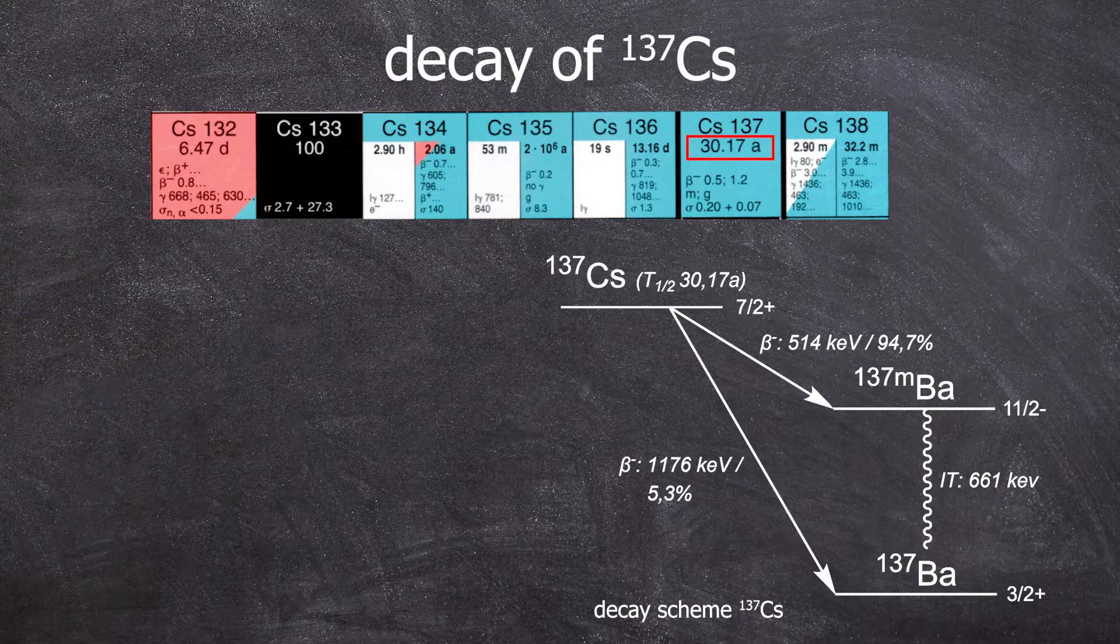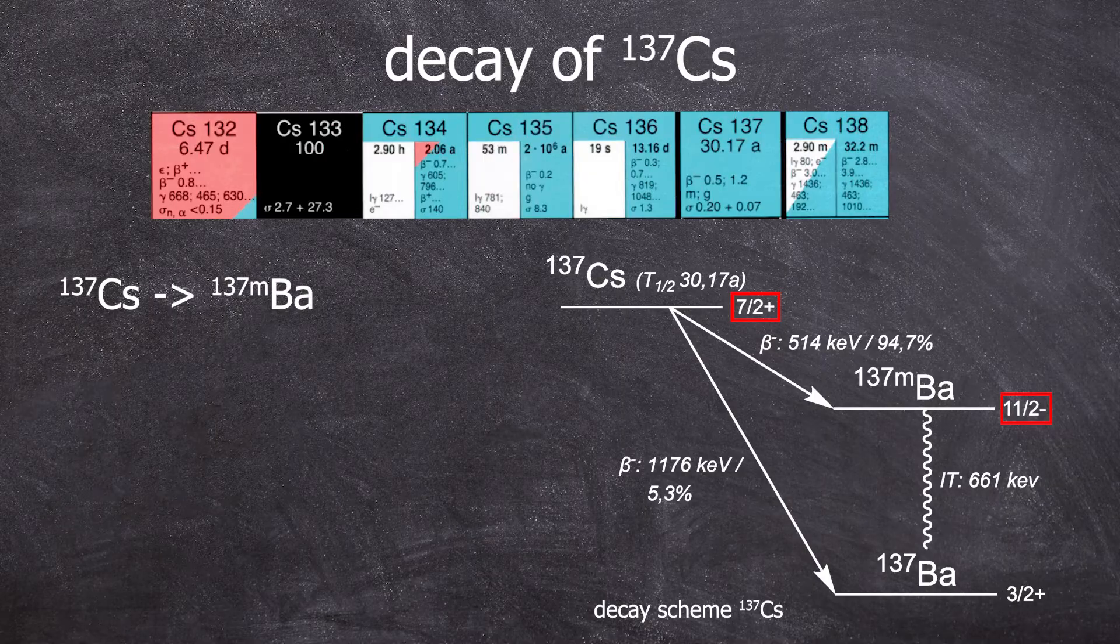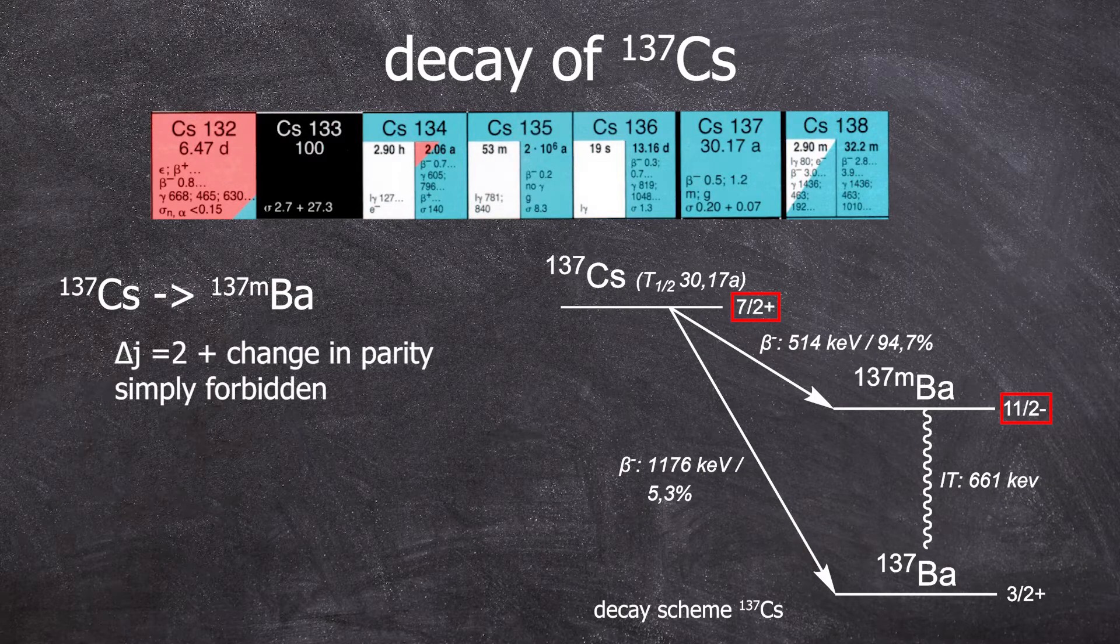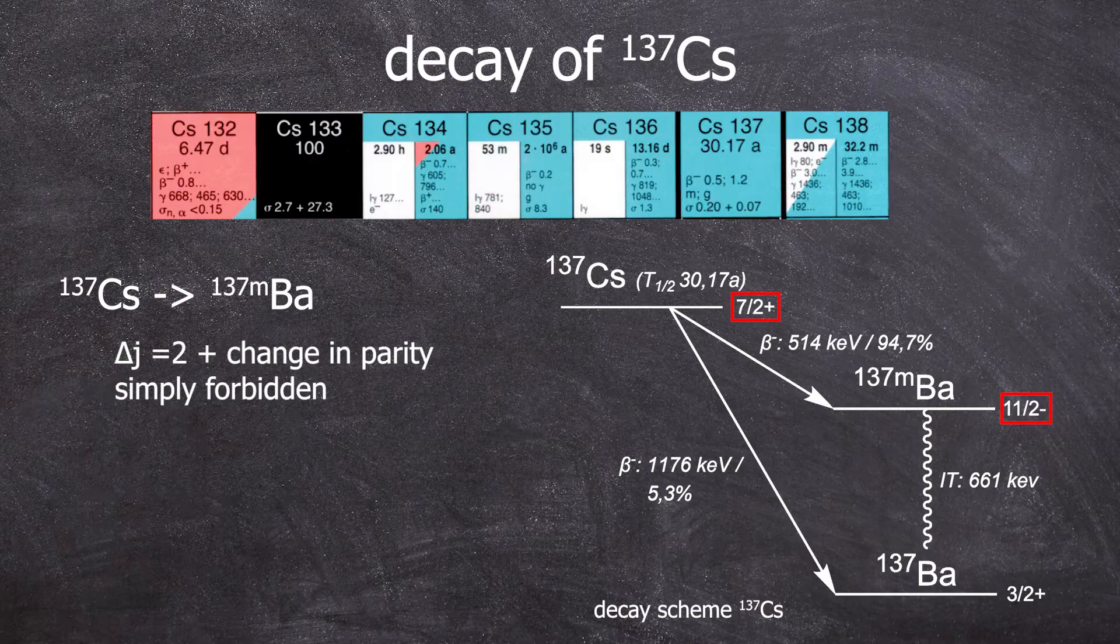The cesium-137 nucleus has a spin of plus seven halves, while the daughter nucleus barium-137M has a spin of minus 11 halves. This results in a delta J of four halves, meaning it has to change angular momentum alongside a change of parity from plus to minus.